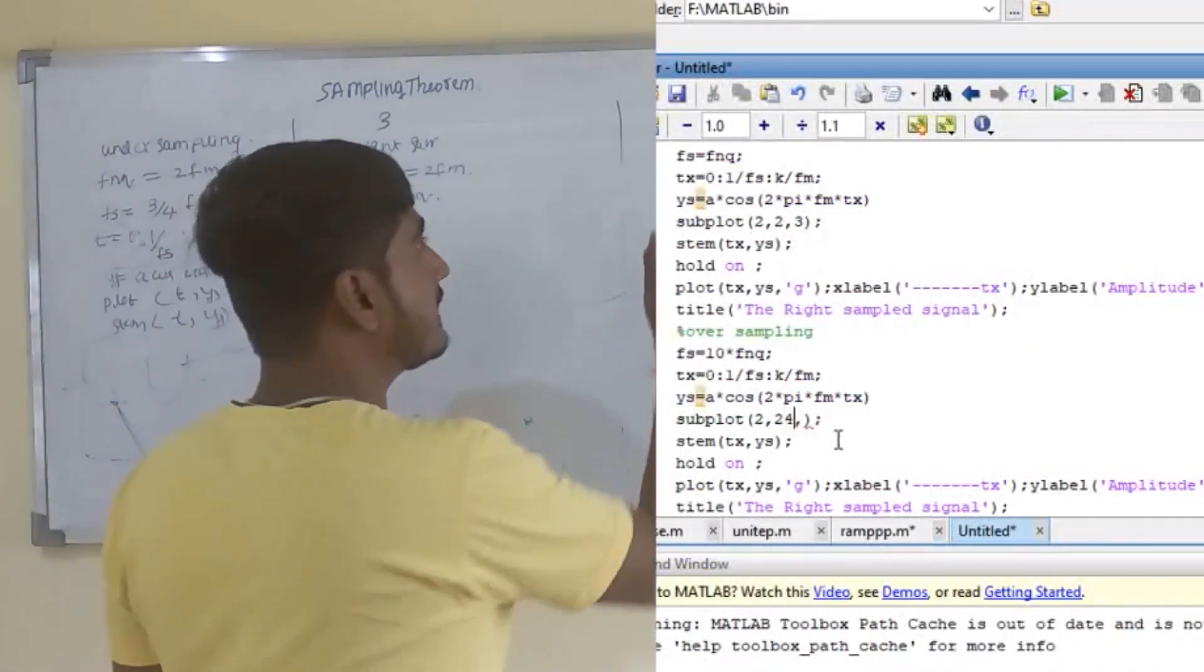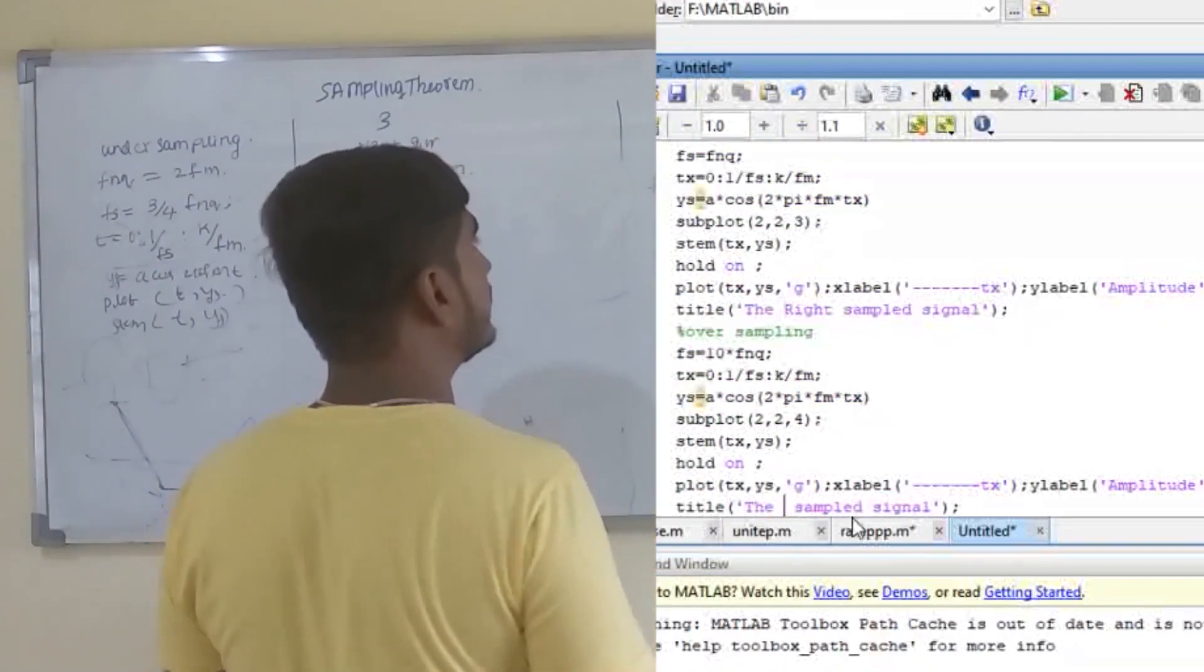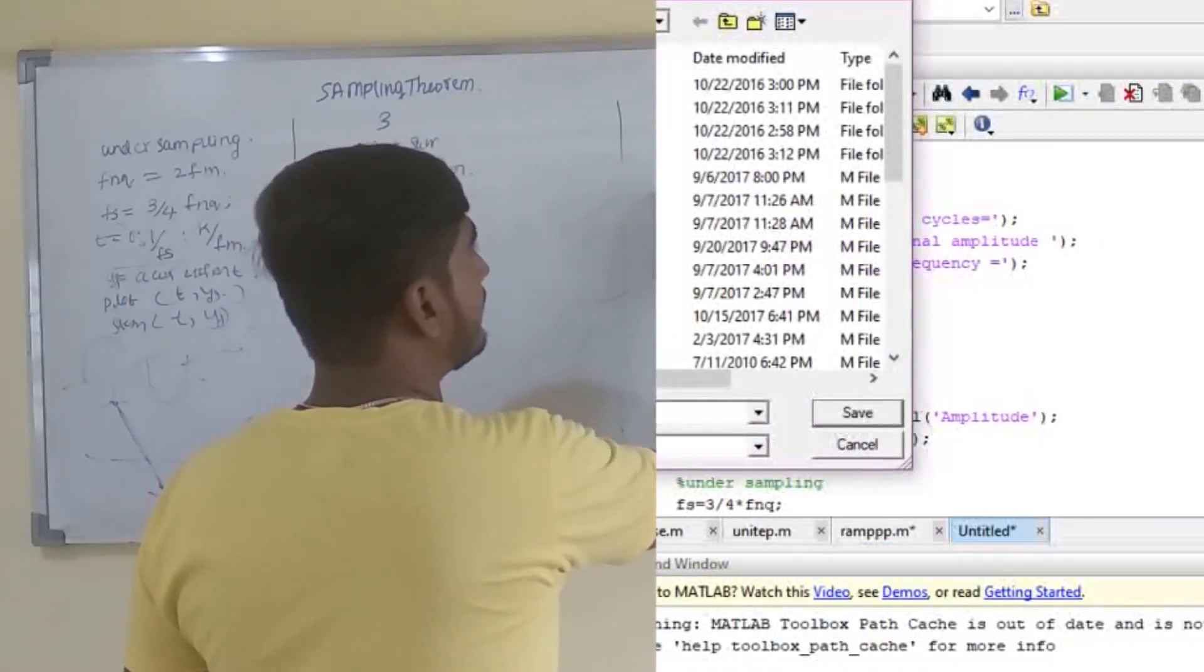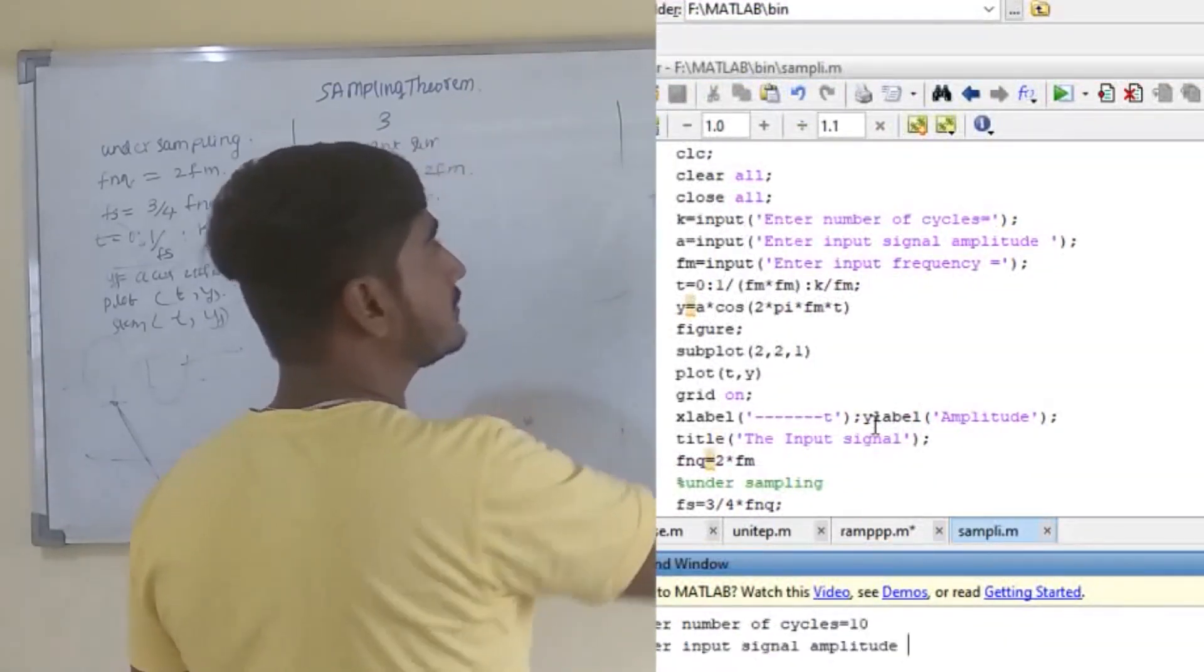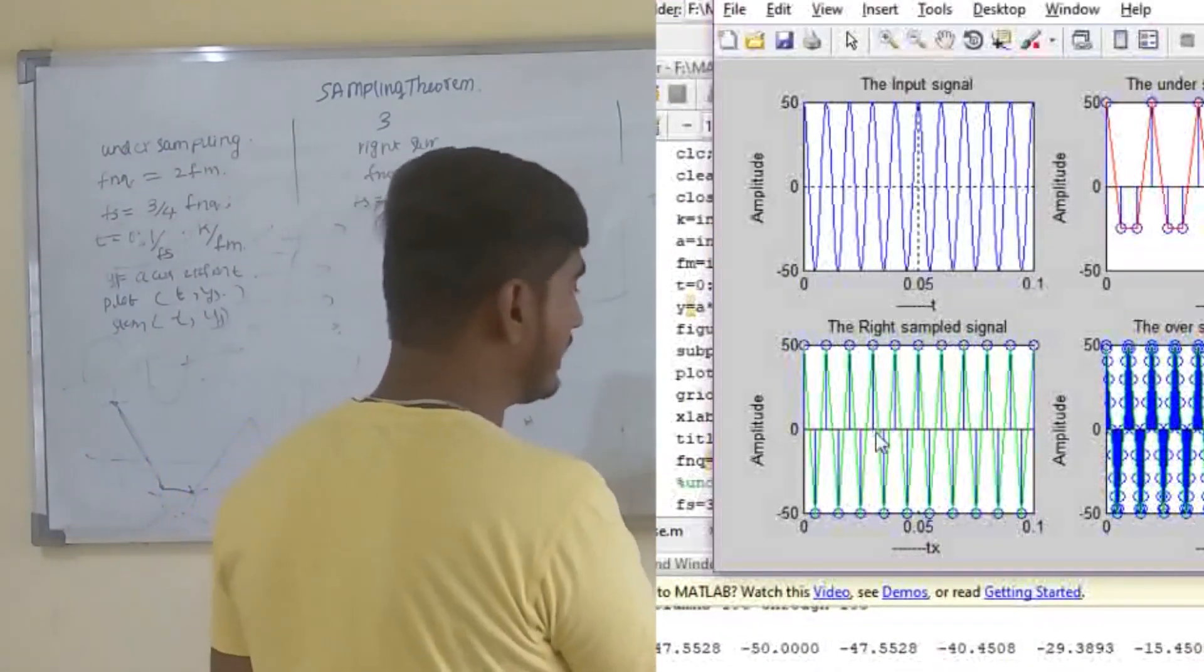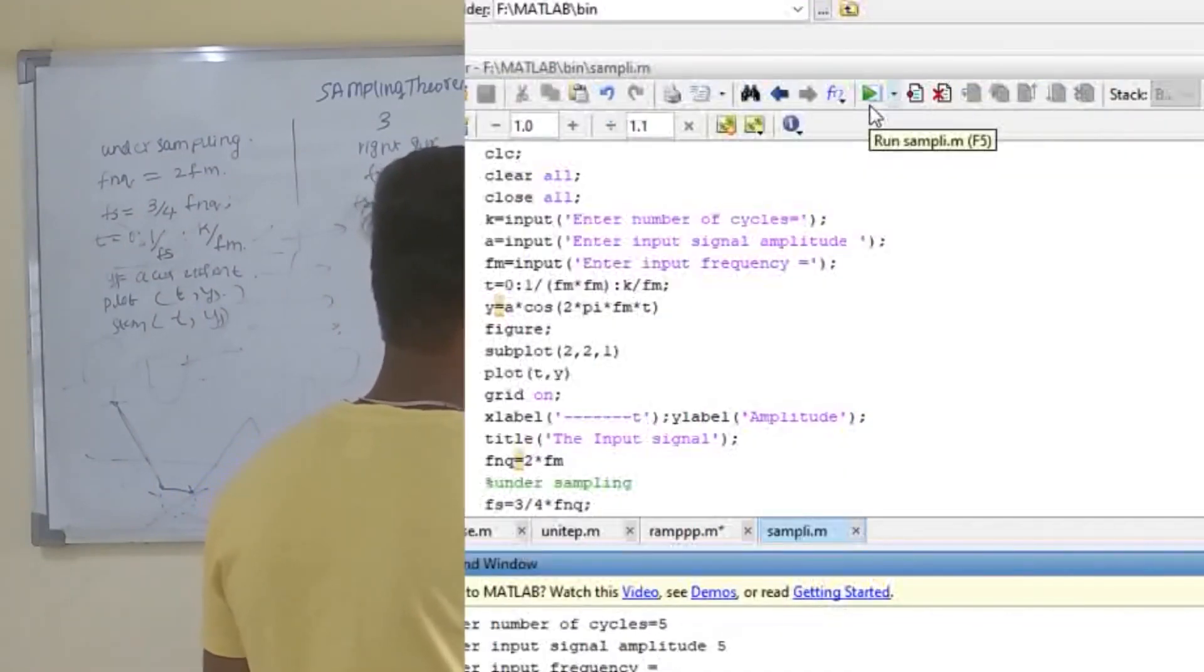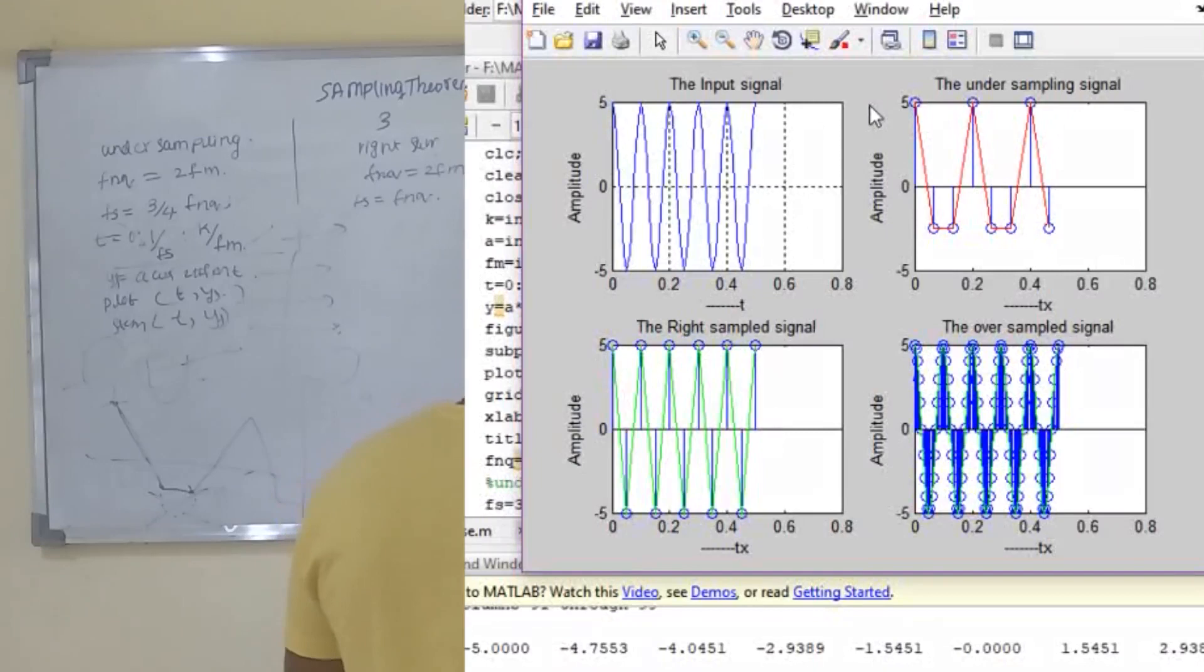For oversampling, what we will do is, we will assume Fs equal to 10 times Fnq. This will be more than sufficient. After this, we will be getting a graph like this with so many discrete points. As if we are using stem, we will get this.